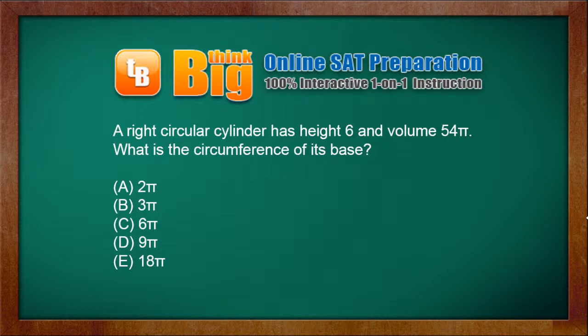A right circular cylinder has height 6 and volume 54 pi. What is the circumference of its base?